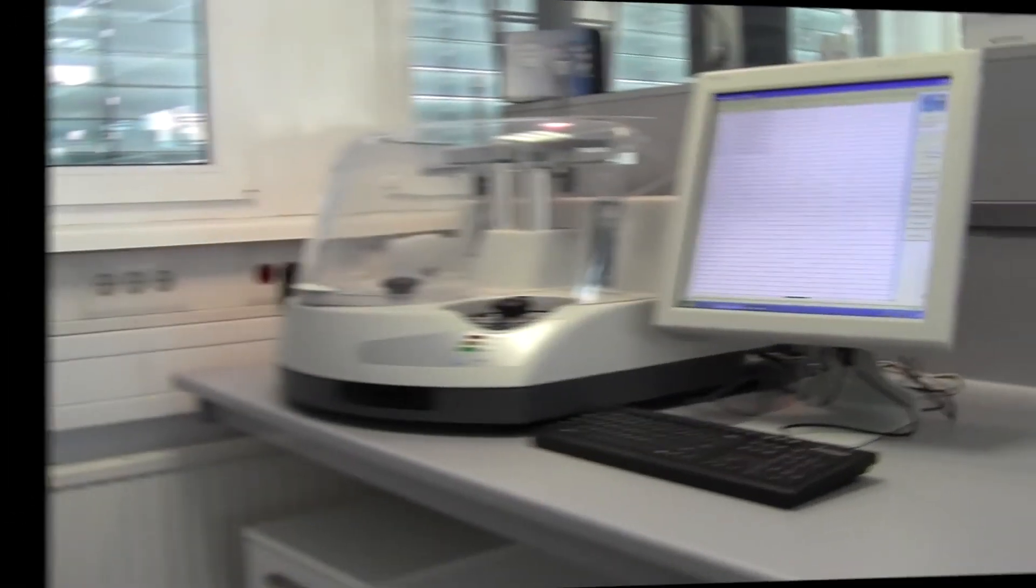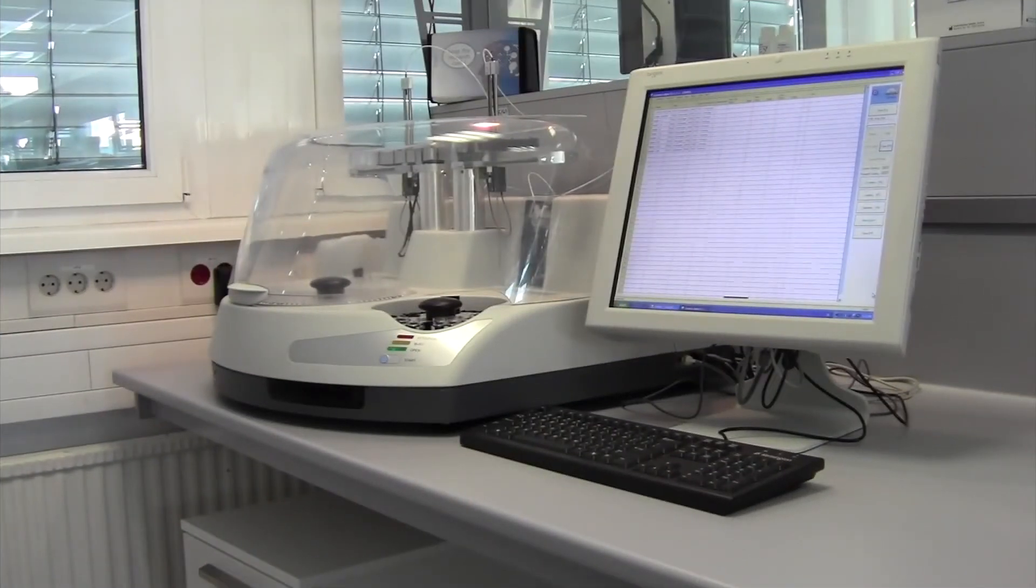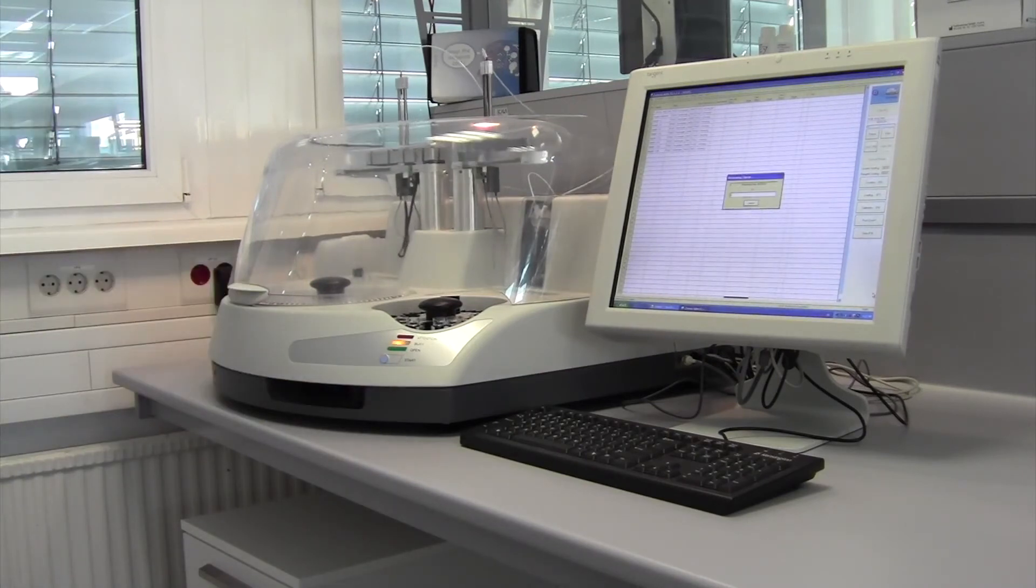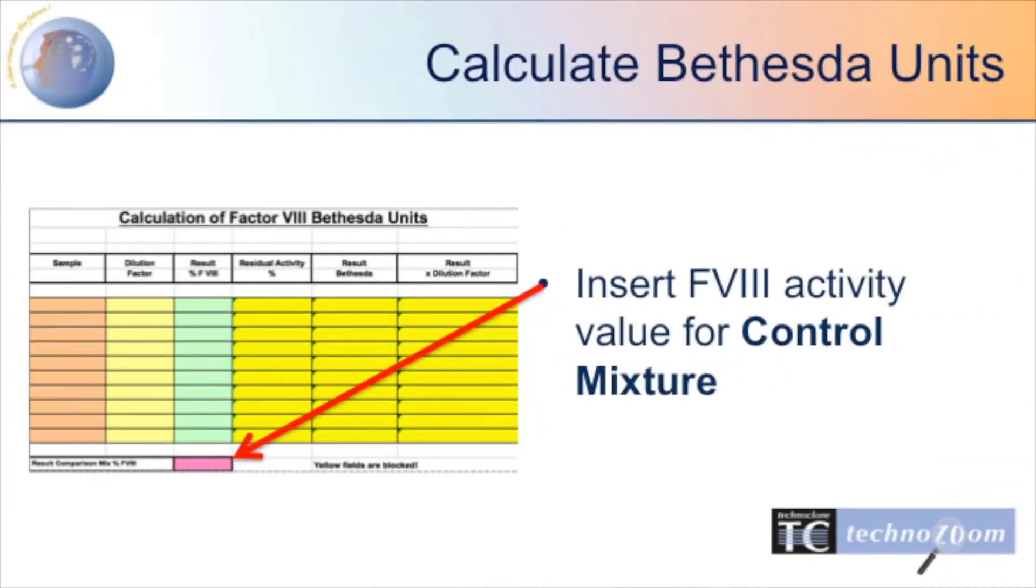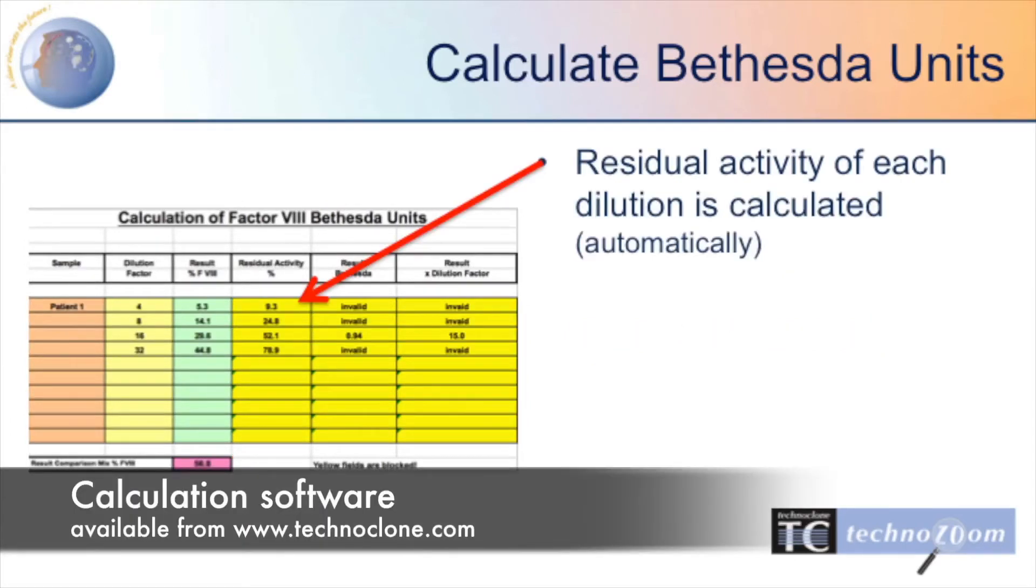Thereafter, you are ready to perform your Factor VIII inhibitor assay on your coagulation analyzer or on your analyzer reader. The reported inhibitor value can be calculated with our calculation software available on our website.